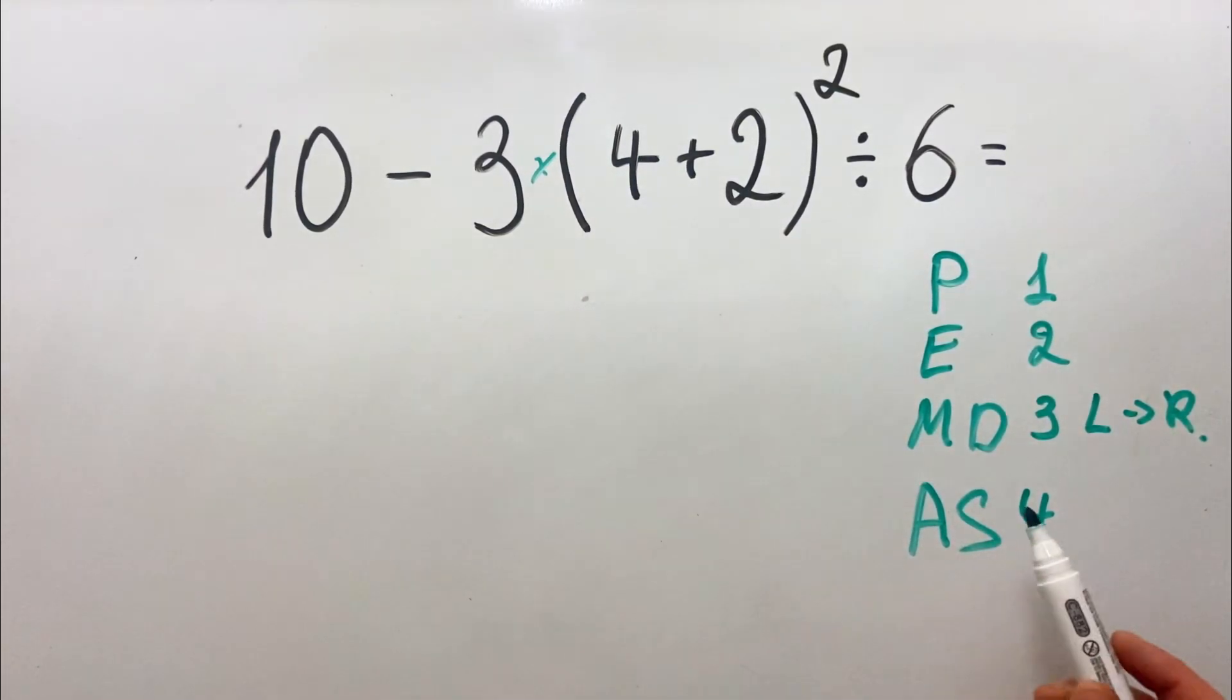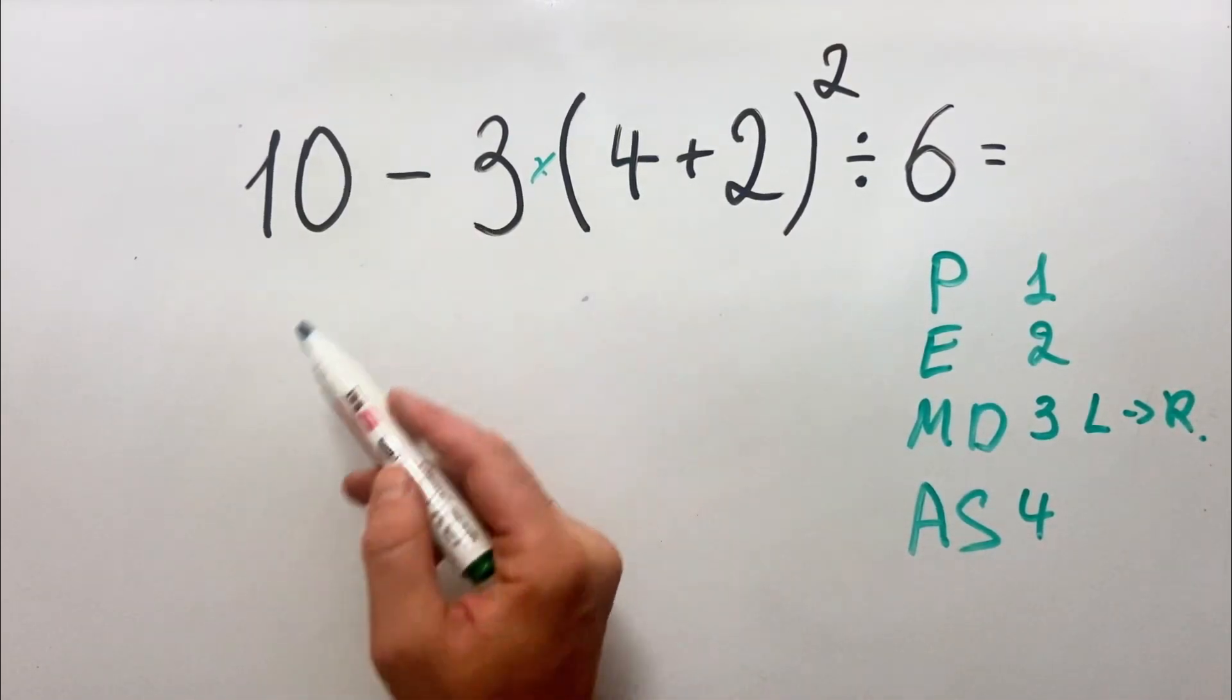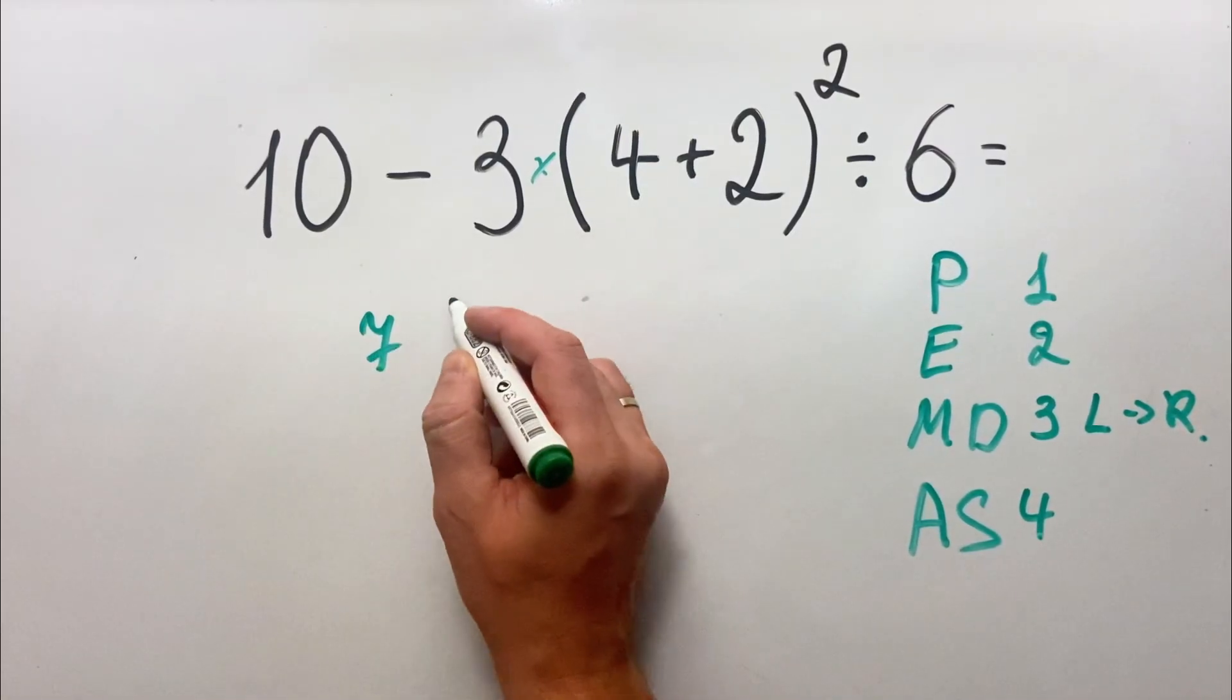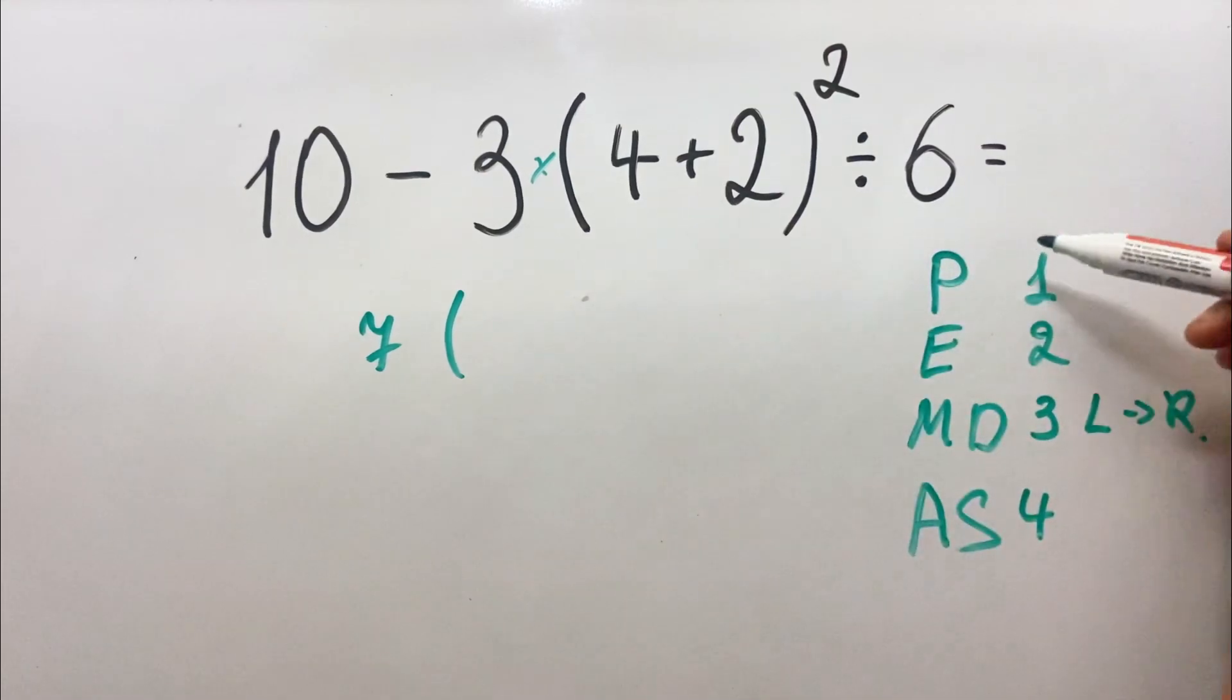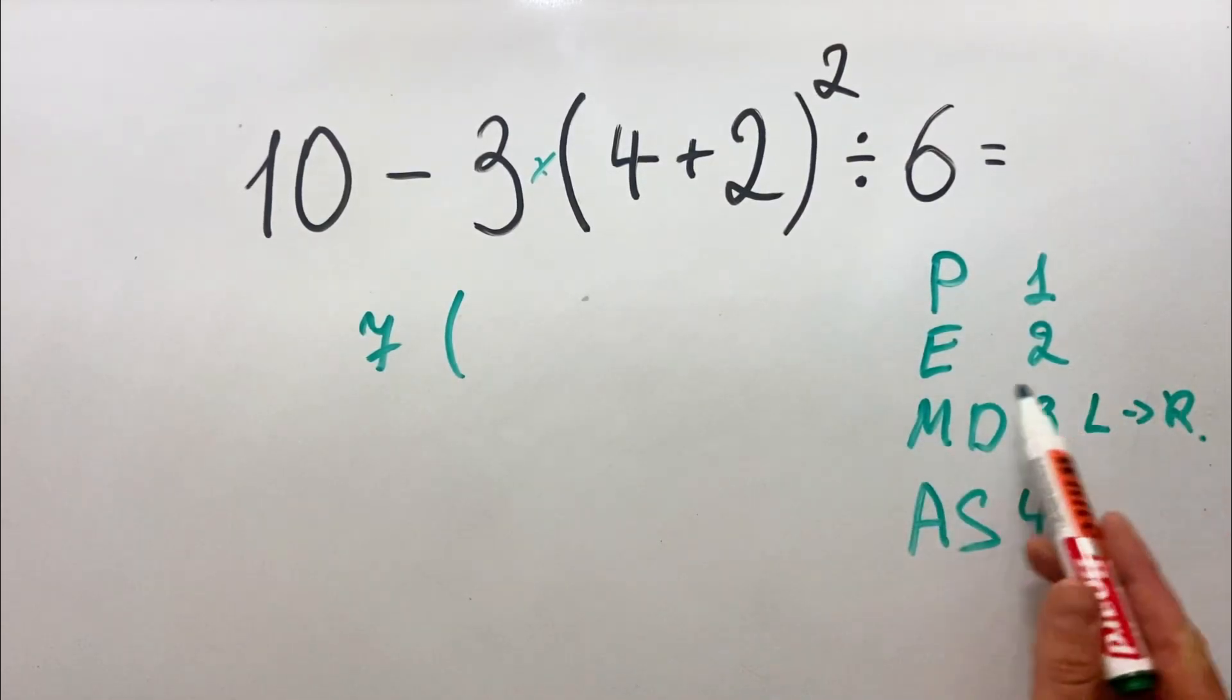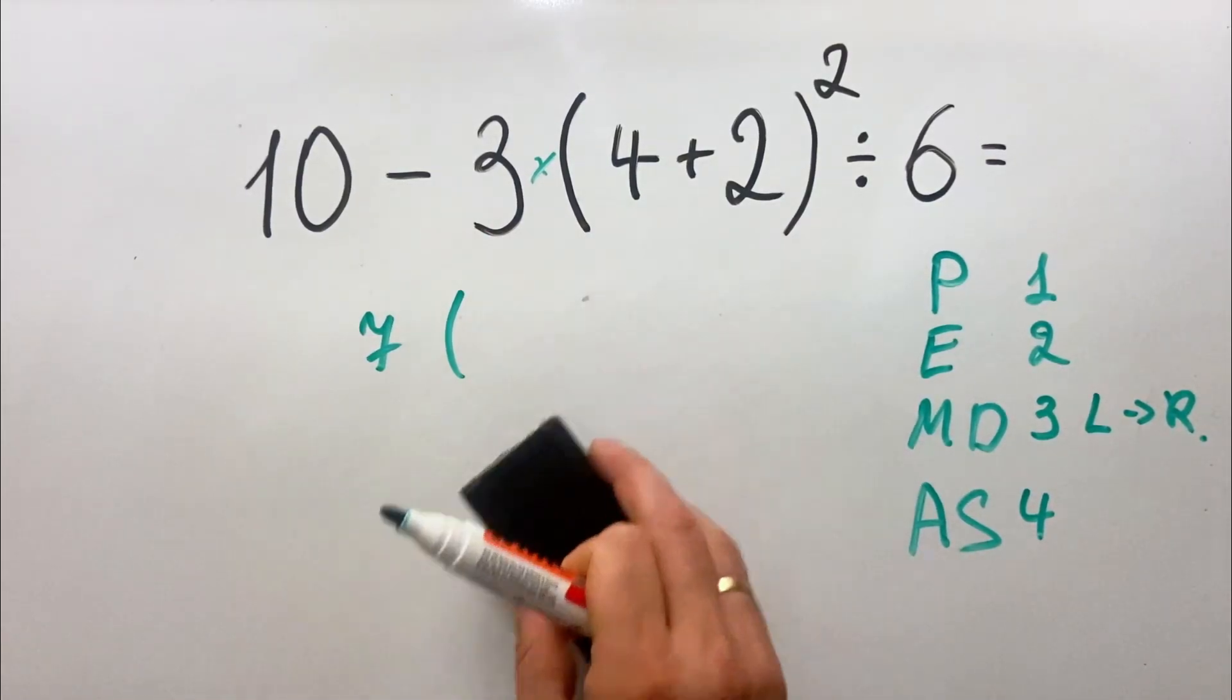This is important: please do not do 10 minus 3 first. Do not start by doing 10 minus 3, which is 7, and then continue, because first we must follow the order of operations. First do what's inside the parenthesis, then exponents, then multiplication and division. Addition and subtraction should be done last.